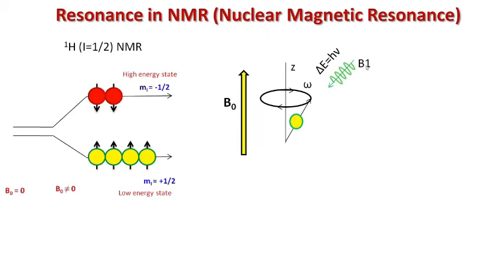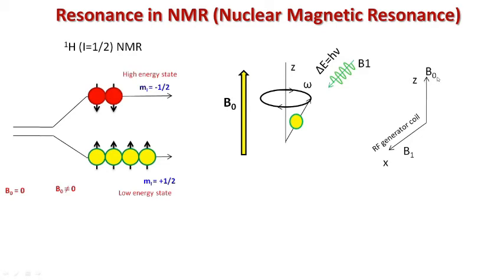The radio frequency radiation is a secondary oscillating magnetic field represented by B1. The magnitude of B1 is several thousand times lower than the applied external magnetic field B0. B1 is applied in the perpendicular direction to the z-axis — for example, in the x-direction — by the RF generator coils. B0 is the static external magnetic field applied in the z-direction.